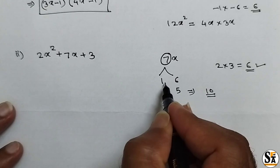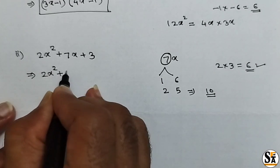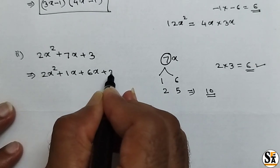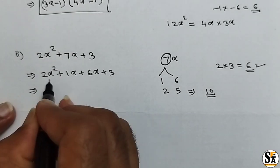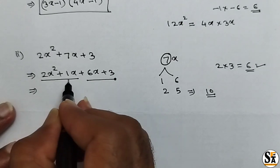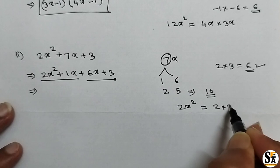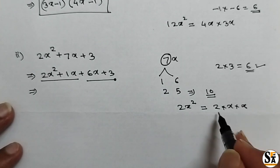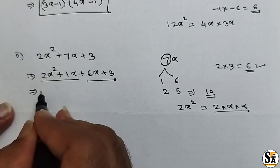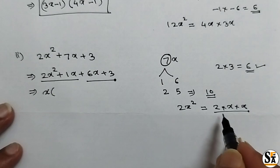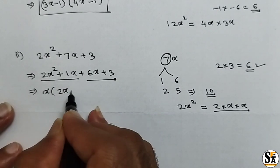So in the next step, write 2x squared plus 1x plus 6x plus 3. Now we have four terms, so make a group of the first two and the last two. From the first two terms, 2x squared can be written as 2 into x into x, so we can take x as common. Remaining terms are 2x and 1. So we write x times the bracket 2x plus 1.